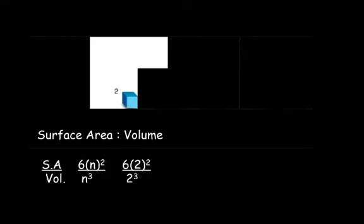Now let's use some numbers. If the length of the cube you see is two units, we plug that in for N and get 24 over 8. That's a ratio of surface area to volume of 3 to 1. The surface area is three times larger than the volume.